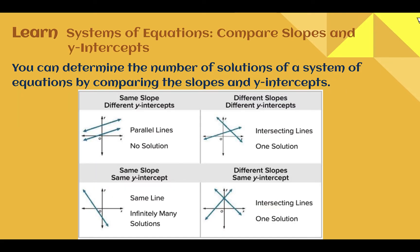Let's learn. Systems of equations — compare slopes and y-intercepts. You can determine the number of solutions of a system of equations by simply comparing their slopes and their y-intercepts. If they have the same slope but different y-intercepts, they're going to have parallel lines, which means you have no solution. They started in two different places — your y-intercepts — but their rate of change was the same, so they will never intersect. If you have the same slope and same y-intercept, that's when you get the same line, which means you have infinitely many solutions. So if you see the same slope in both, it's going to be one of those special cases with either no solution or infinite solutions.